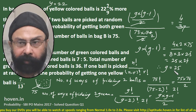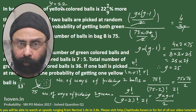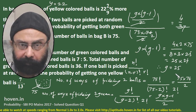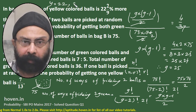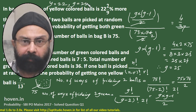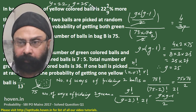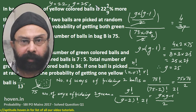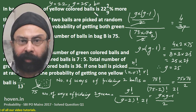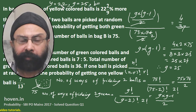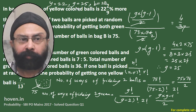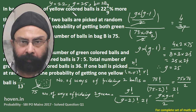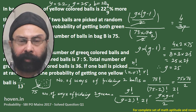So we have calculated yellow Y = 22, green G = 25, and total = 75 in bag B. Therefore black balls = 75 − 25 − 22 = 28. So the quantity of balls for bag B is: yellow = 22, green = 25, black = 28. We will note this down and now move to bag C.